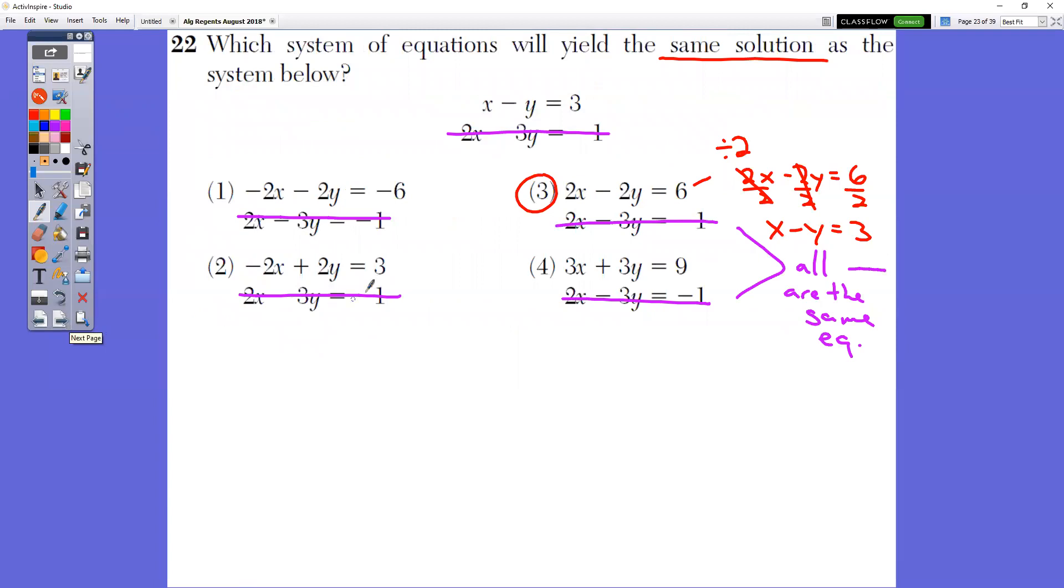In question number 22, which system of equations would yield the same solution as the system below? Notice that in the purple here, I crossed off all these second ones, I crossed off all these second ones, because they're literally the same exact equation written over and over and over and over again. So I could care less, those are all the same. So what we're really making is we want to know this one right here is equal to which of the top solutions. Well, if you take number three, and you divide it by two, so divide by two, divide by two, divide by two, you get that original equation of x minus y equals three. So that would be choice three.